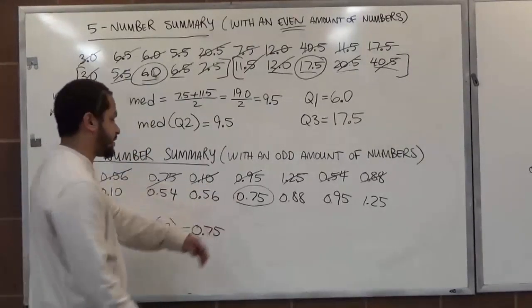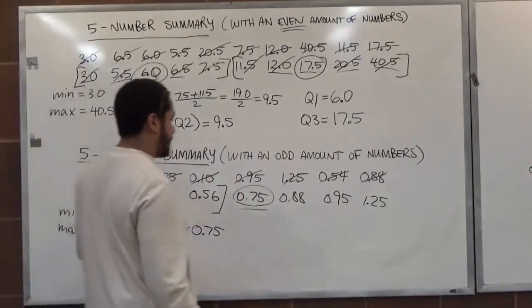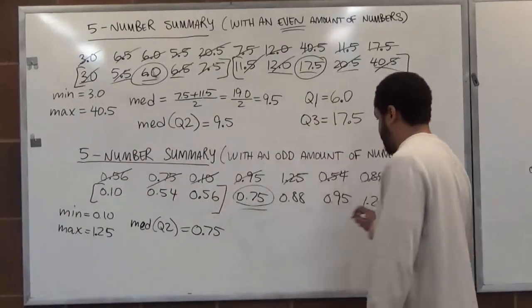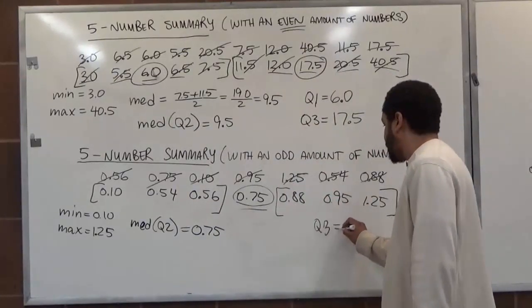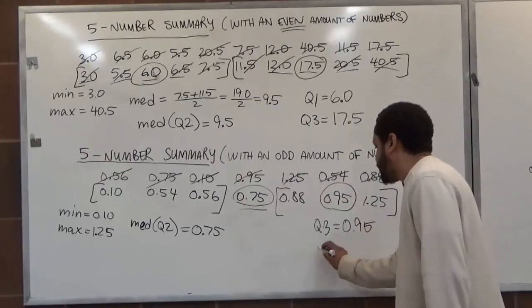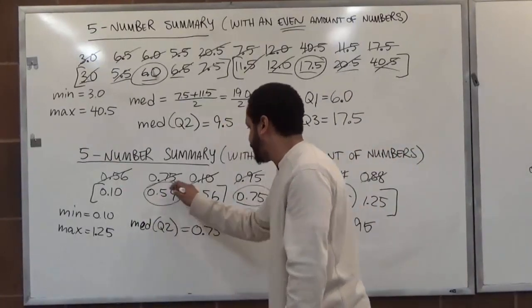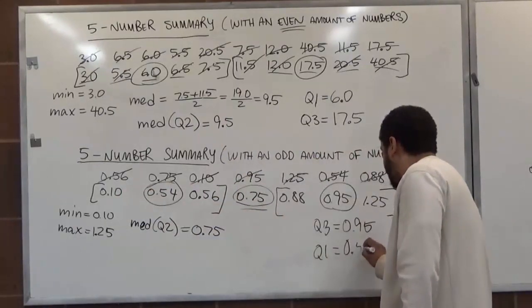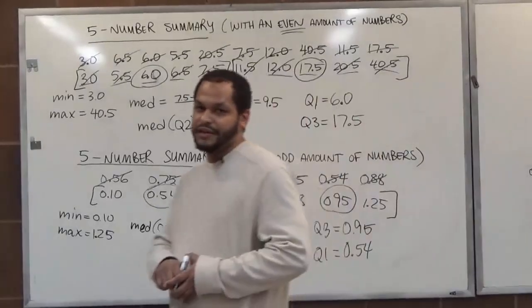Now that we knocked off this one, we're just going to ignore this term, and we're going to just take these two sets of data and find what lies between them. So for Q3 over here, we're going to have 0.95. And for Q1 over there, we're going to take these two off, and we get 0.54. And that concludes our five number summaries for odd and even numbers.